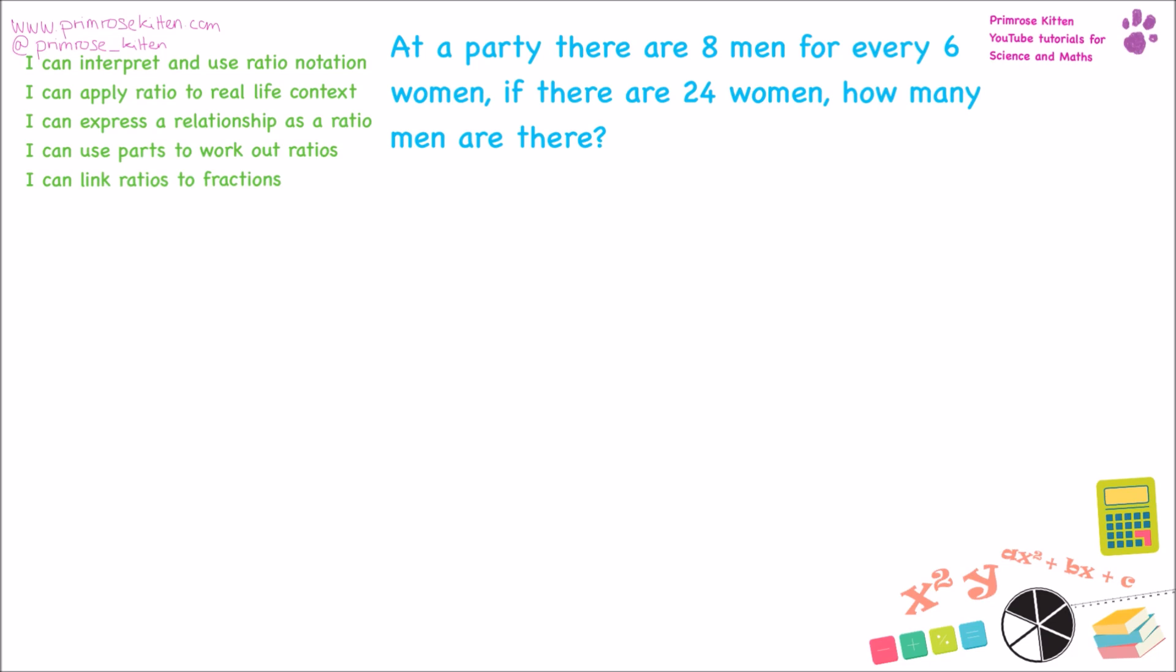Ratios can come up in a lot of different ways. One of the ways they can come up is in particularly wordy questions, where it doesn't necessarily look like a ratios question, but you have to work out. And you have to take the real life context and express the relationship as a ratio. So at a party, there are men and there are women. There are eight men for every six women. If there are 24 women, how many men are there? Now you'll notice when I've written this out, I've left a big gap in the middle here. That is because I'm going to put one in here. And this is how I'm going to work out my ratio.